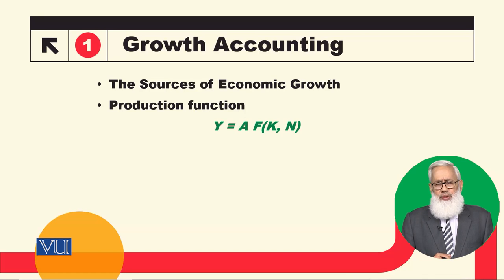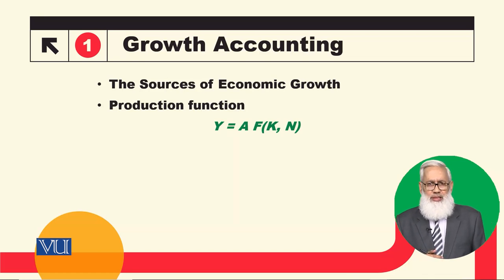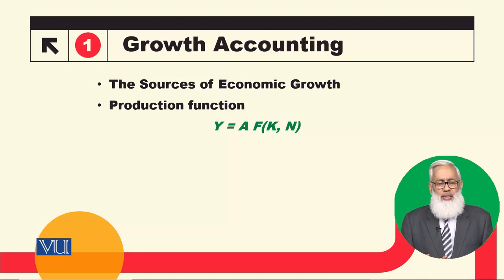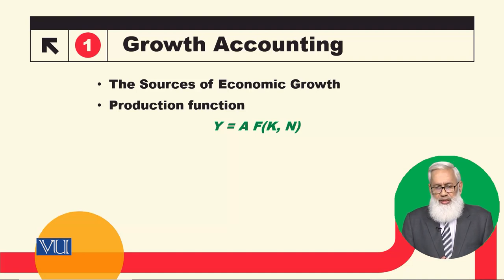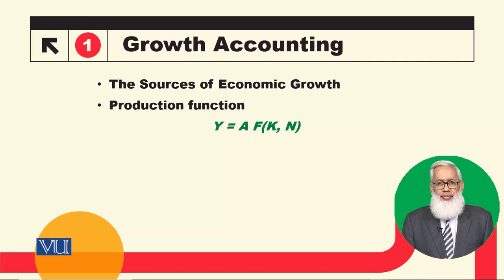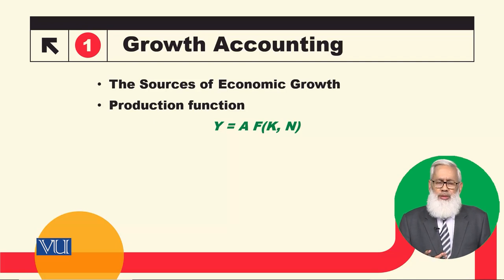In module 70, we will talk about the production function in very detail. According to this production function, y is equal to A times f(K, N). Here y is the output, A is technology, K is capital stock, and N is labor. This means A, which we are multiplying with f(K, N).